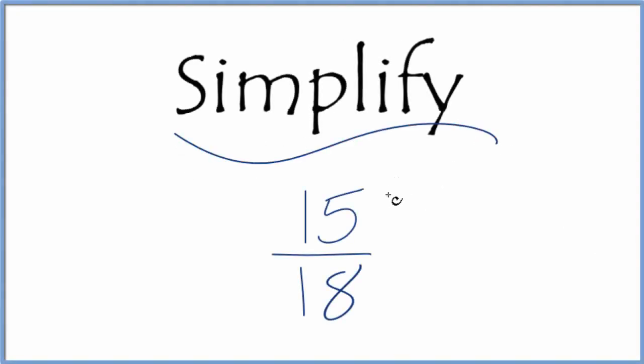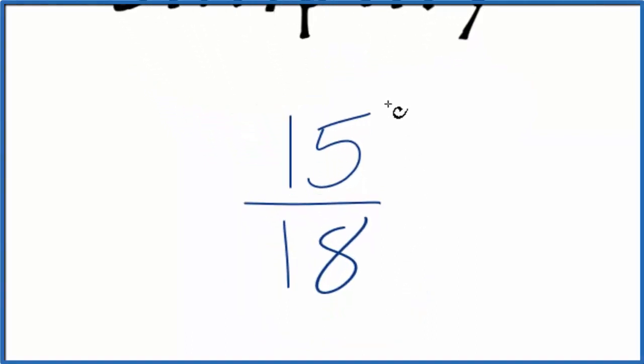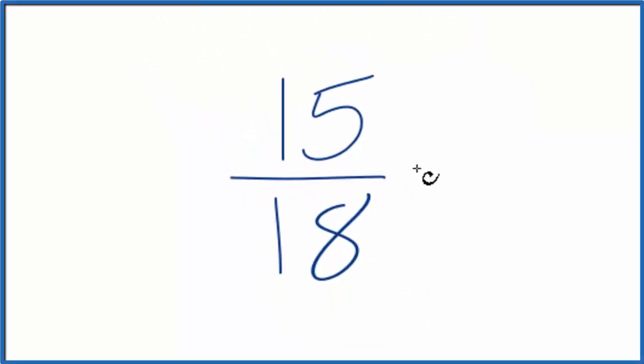Let's simplify the fraction 15 over 18. So what we're trying to do is find another fraction for 15 eighteenths that has the same value. It's an equivalent fraction, but it's in lowest terms.